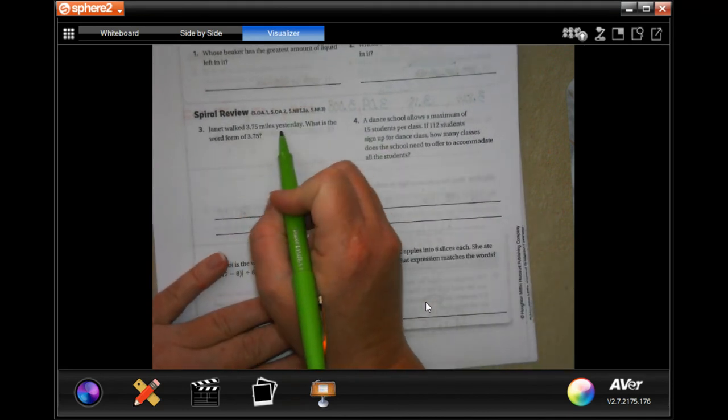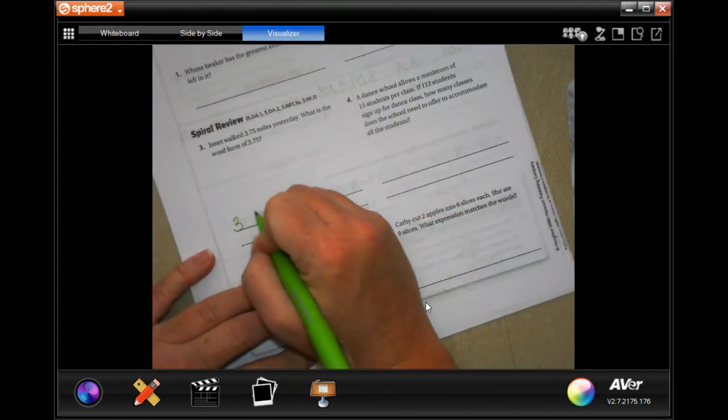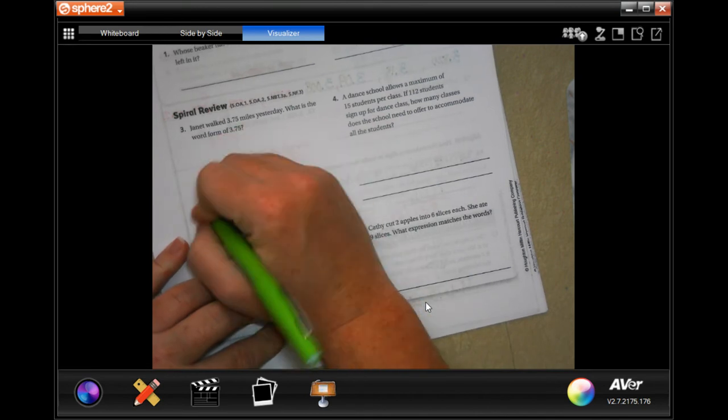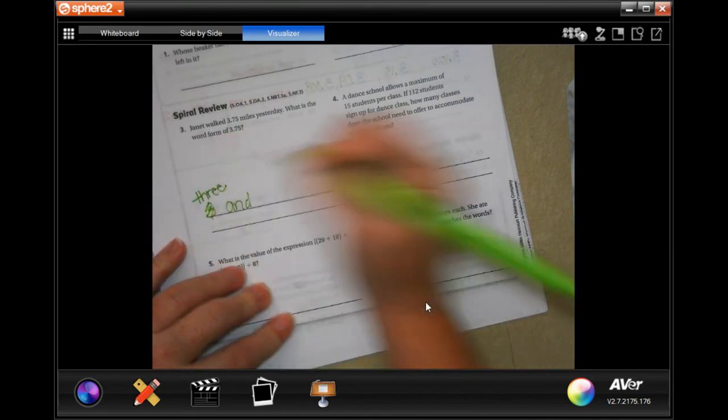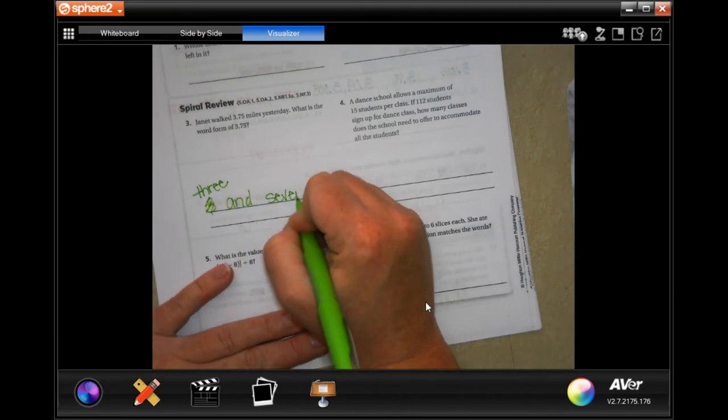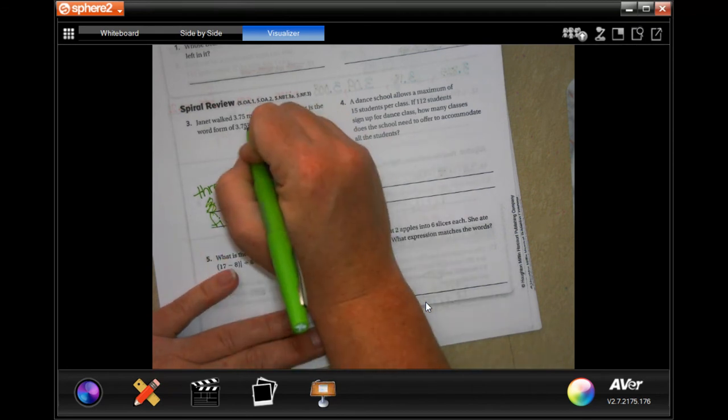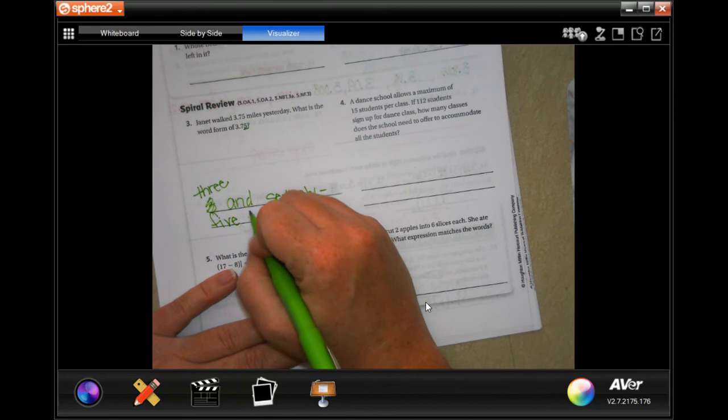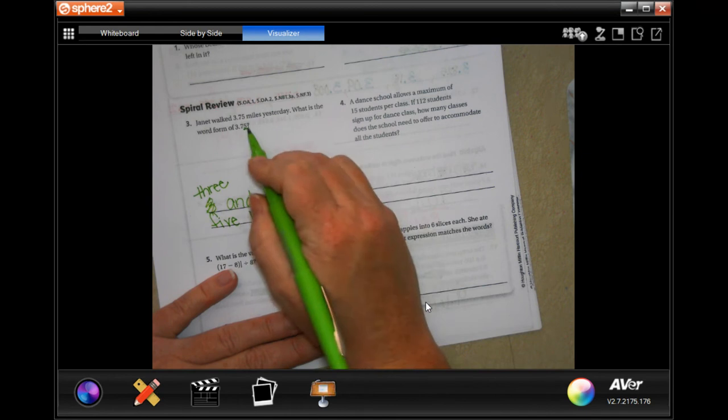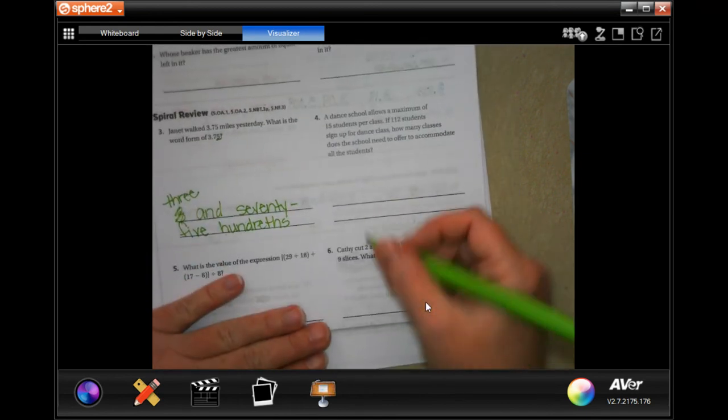Janet walked 3.7 miles yesterday. What is the word form of 3.75? So, 3, and, well, I guess I should spell out 3 for you guys, huh? Since it's asking for word form, 3 and 75, and this is in the hundredth. Wherever the last number lands, that's what you're, that's the column you're in.